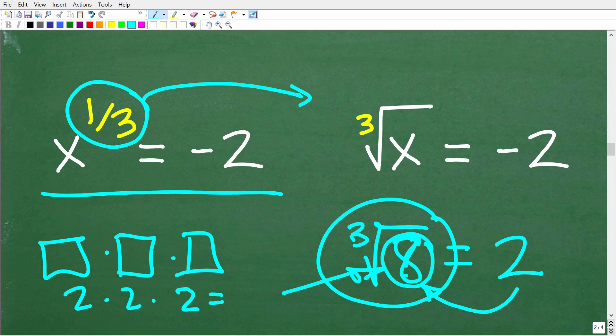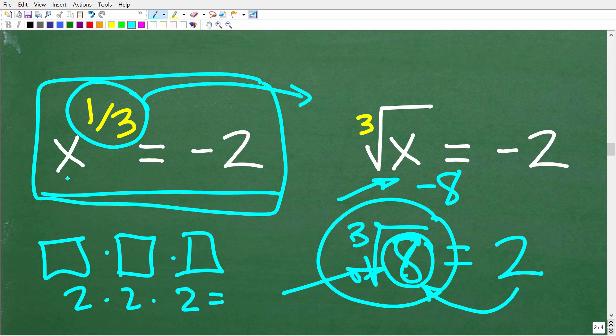So you might be thinking to yourself, well, maybe the answer here is negative 8. Well, if you're thinking in those terms, you are thinking on the right track, but there is a very easy way to solve this type of equation when we have an equation expressed with rational exponents.